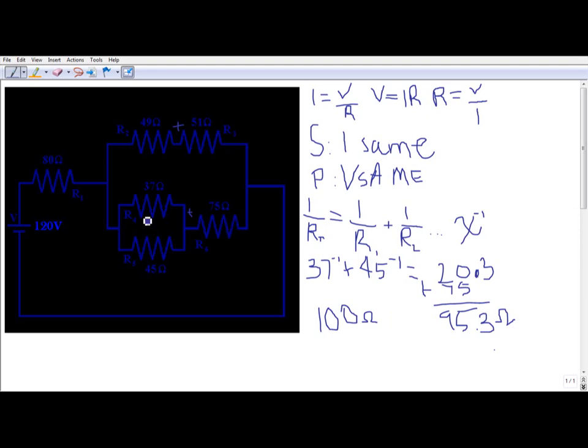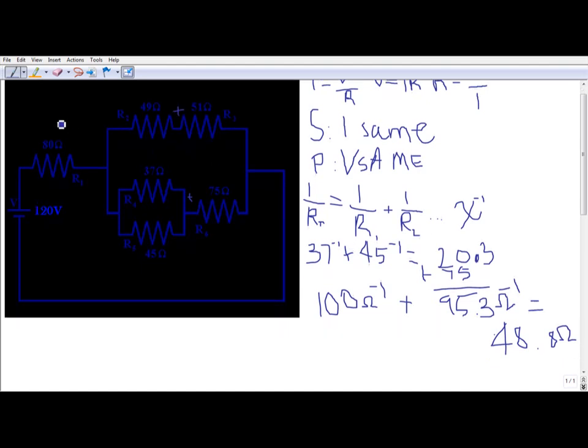Okay, and then, since these two are in parallel, you can't just add them. You have to do the inverse of them and add them together, and then you have to do the inverse of the answer you get. So 100 inverse plus 95.3 inverse equals, you should get 0.0204 continuing. You need to do the inverse of that and you get 48.79, so we'll just round that up to 48.8 ohms.